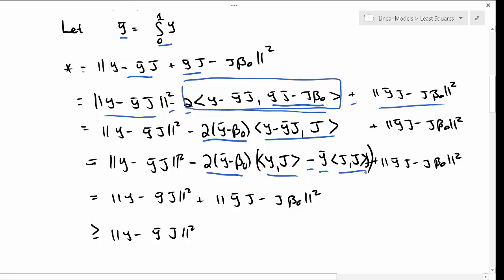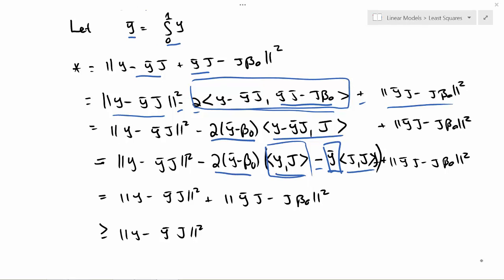The inner product of j with itself, because it's this identity function, is simply 1. So it's y bar minus the inner product of y and j. But we defined y bar as exactly the inner product of y and j, so that whole term is 0.